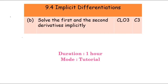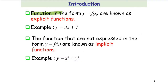Today we are going to learn about Implicit Differentiation. Our objective is to solve the first and second derivatives implicitly. As an introduction, we need to understand the meaning of implicit and explicit functions. Functions in the form of y equals f(x) are known as explicit functions. For example, y equals 3x plus 1 is an explicit function because we only have one type of variable, which is x.